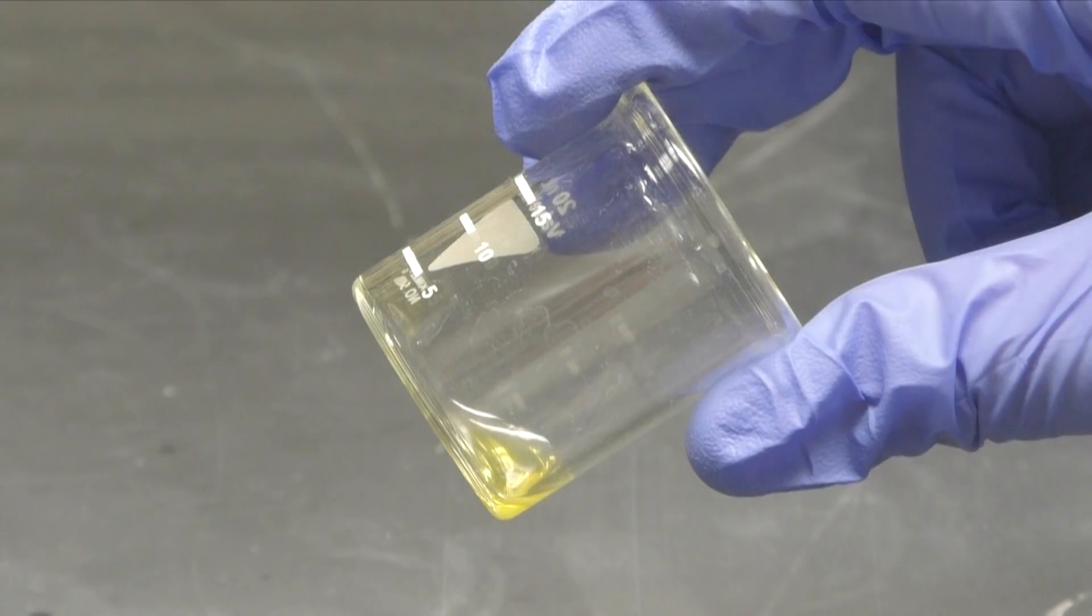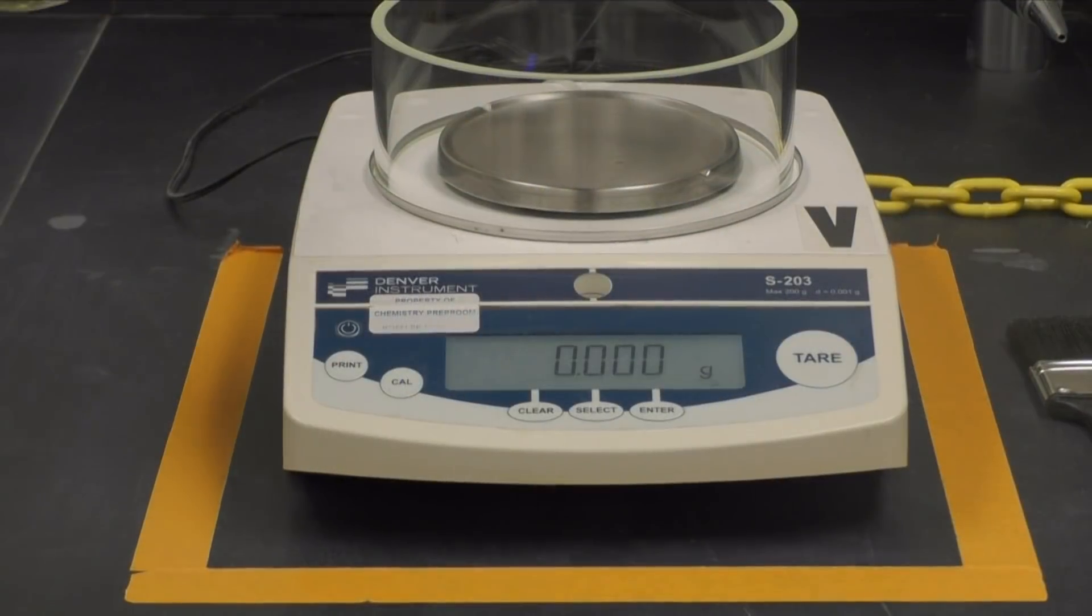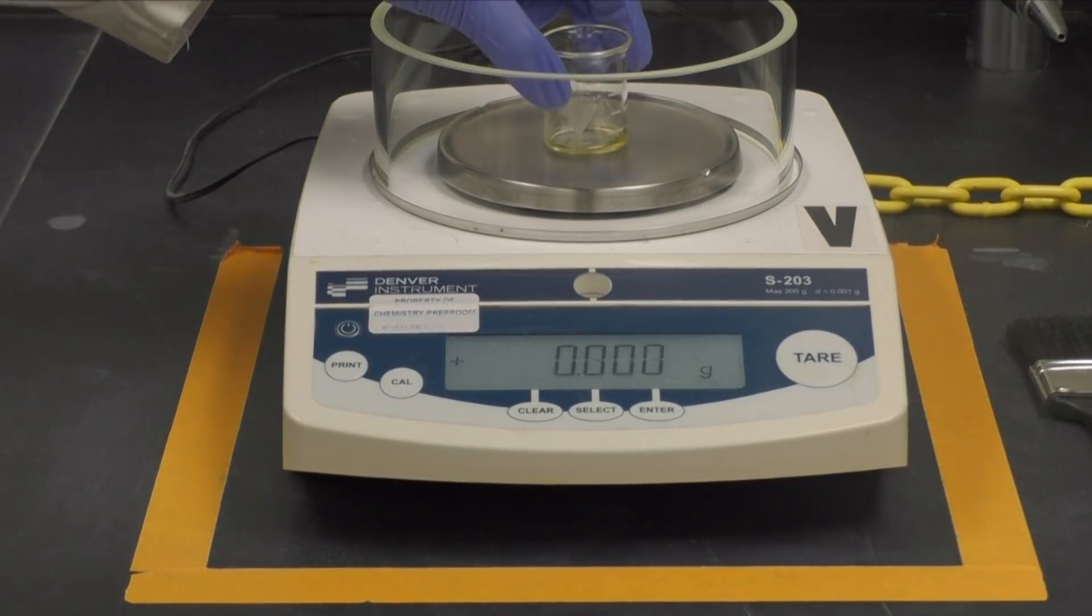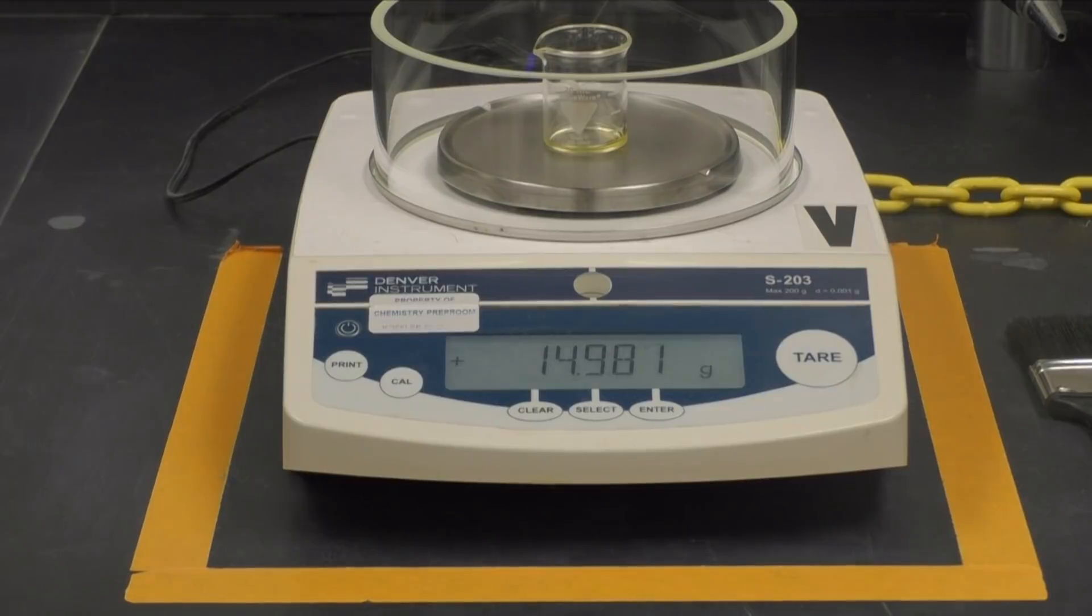After evaporating the solvent for about five minutes, you should be left with just lipids. You should now weigh your beaker and subtract the initial mass of your empty beaker from the final mass to determine the mass of your isolated sample.